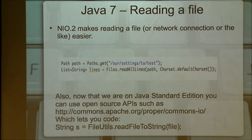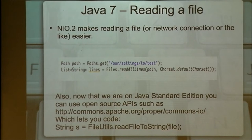They had the exact same problem that the new science building is going to have one day. In Java 7 they came up with a better name, but New I/O was taken, so they said: New I/O 2. New I/O 2 is now the way of doing Input/Output in Java. It's a lot easier, so it was worth it and we'll forgive them the name.